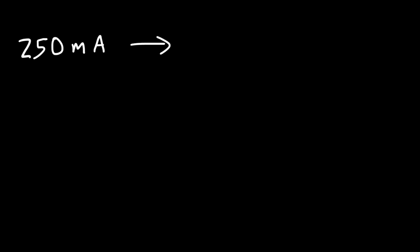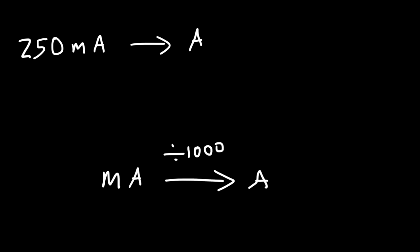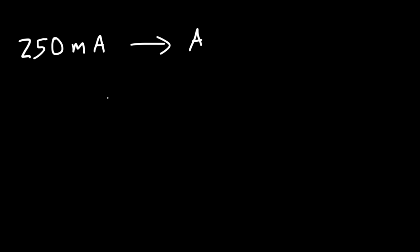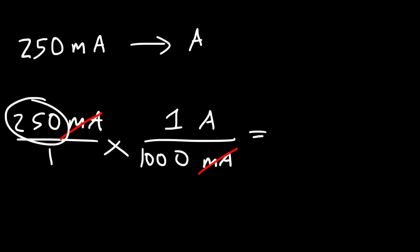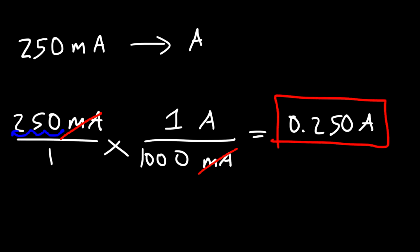Let's say you have a current of 250 milliamps — how much current does this represent in amps? To convert milliamps to amps, simply divide by 1,000. To convert amps to milliamps, multiply by 1,000. Start with 250 milliamps, put milliamps on the bottom and amps on top, knowing that 1 amp equals 1,000 milliamps. Take 250 and divide by 1,000 — move the decimal point 3 units to the left. So 250 milliamps is 0.25 amps.